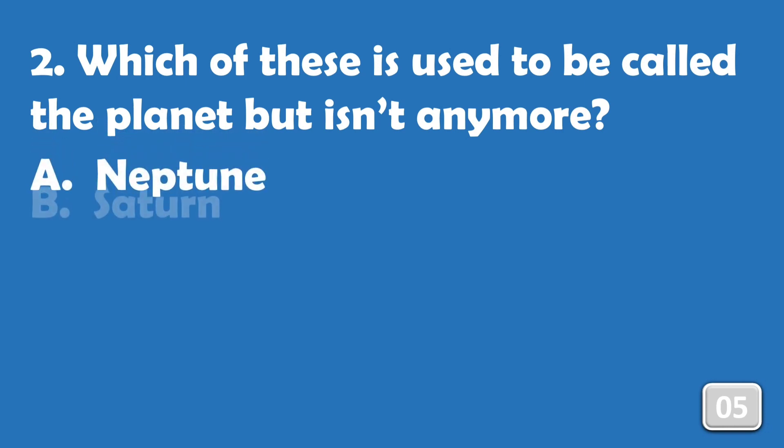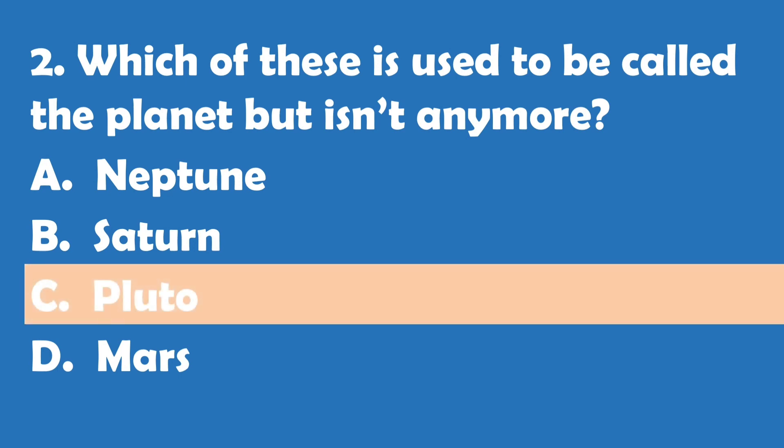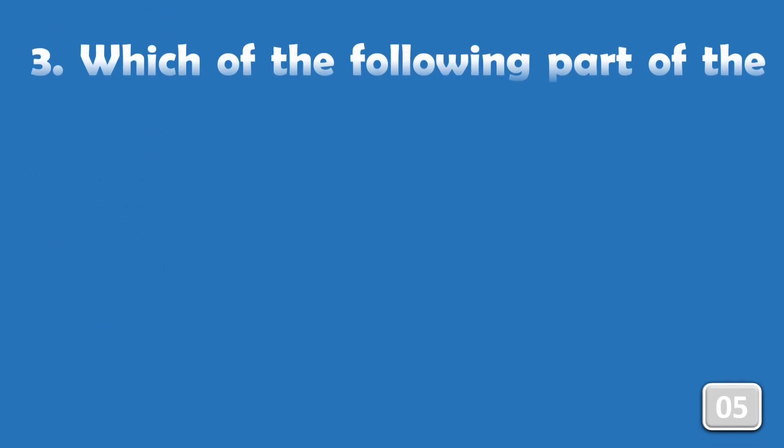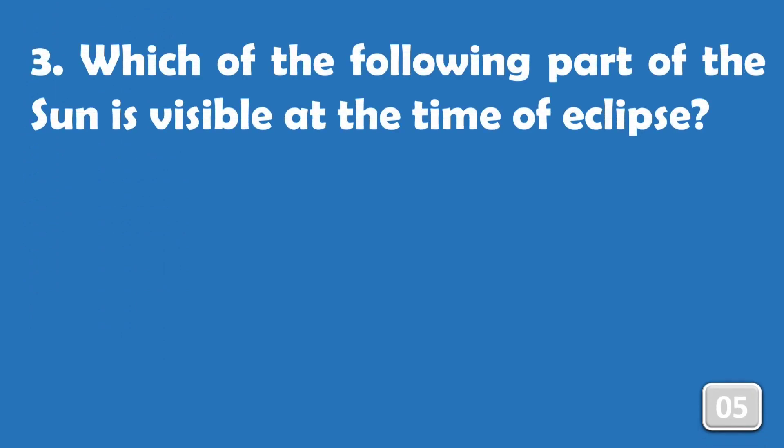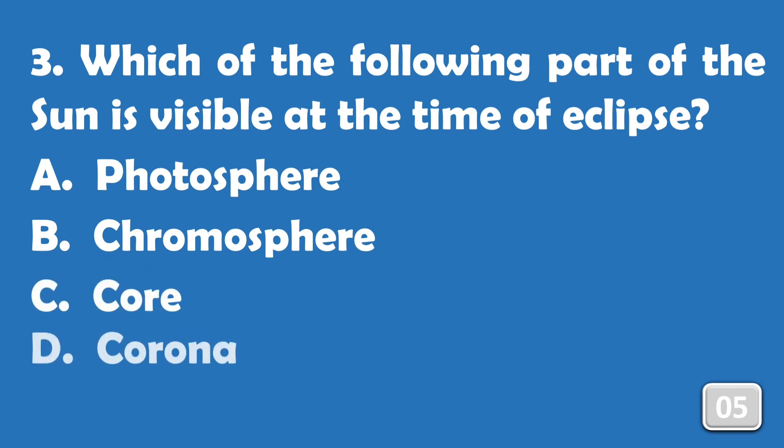Options are: A) Neptune, B) Saturn, C) Pluto, or D) Mars. The correct answer is option C, Pluto. Which of the following part of the Sun is visible at the time of eclipse?